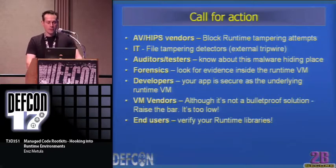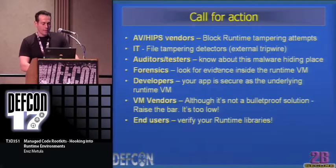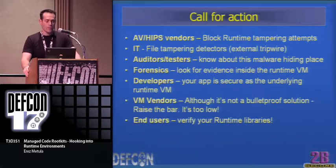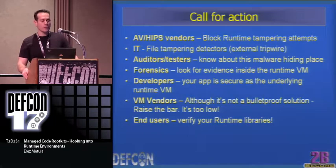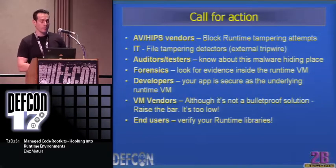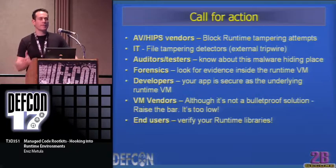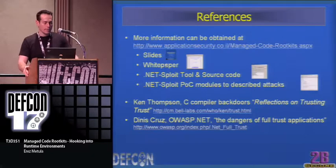For more information about this research, see the slides, white paper, .NET Exploit tool, and source code at the referenced page. Credit to Ken Thompson, who first talked about C compiler backdoors, and Dennis Cruz from the OOS.NET group who discussed the dangers of full-trust applications. To summarize: malicious code can be hidden inside the application virtual machine as an alternative place for hiding malware — not just kernel or BIOS. Very interesting attacks can be devised. This does not depend on any specific vulnerability and is not restricted to any machine, technology, .NET, or Java — it's a generic problem.